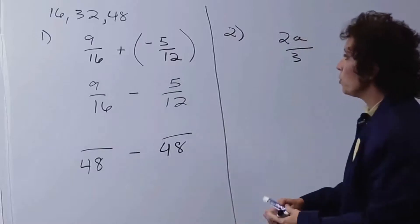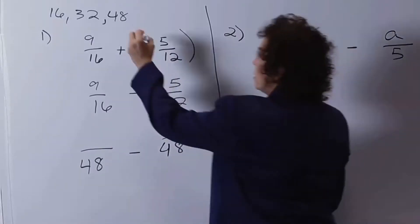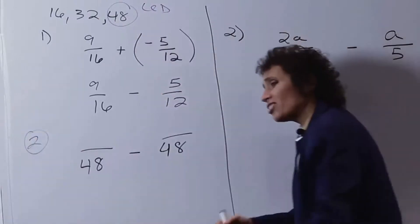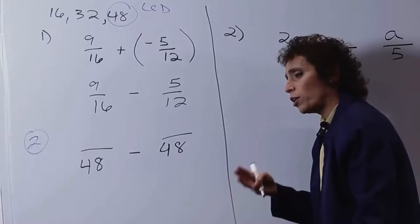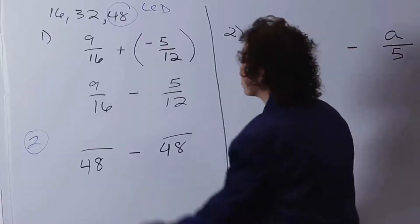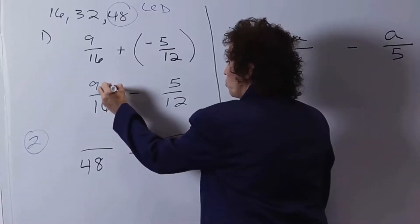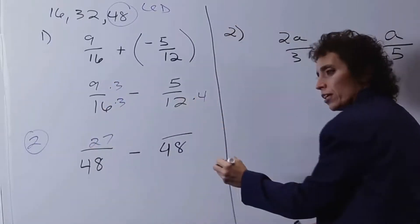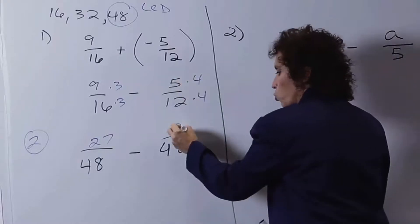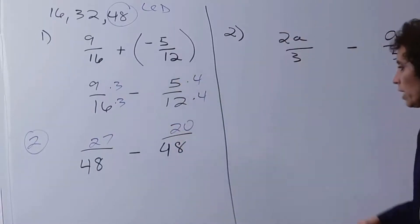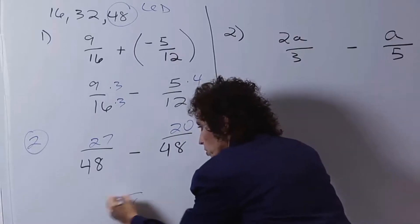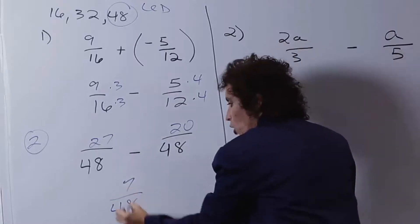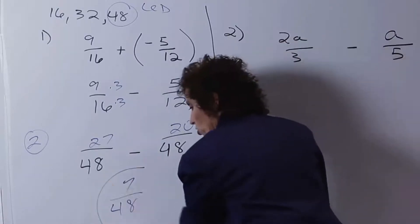Now I have to multiply to get 48. 16 times 3 is 48, so 9 times 3 is 27. 12 times 4 is 48, so 5 times 4 is 20. Now we just keep the denominator. 27 minus 20 — I have 27, I owe 20 — and we get 7. So the answer is 7 forty-eighths.